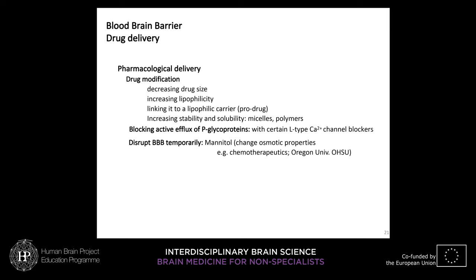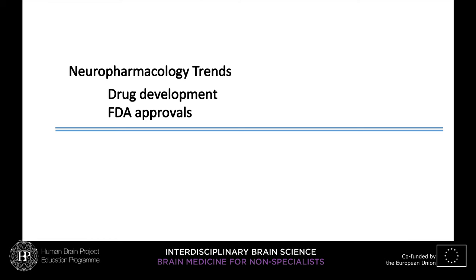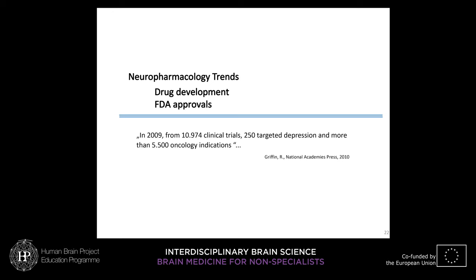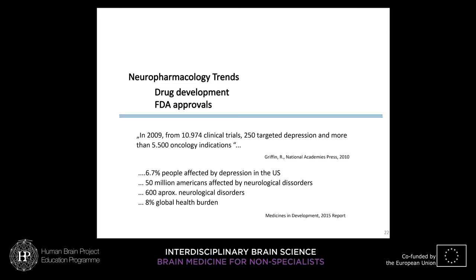Looking at neuropharmacology trends and FDA approvals: in 2009, from around 11,000 clinical trials, only 250 targeted depression while more than 5,500 targeted oncology indications. Yet the numbers for neurological diseases are significant — 6.7% of people in the United States are affected by depression, and 50 million Americans are affected by neurological disorders.